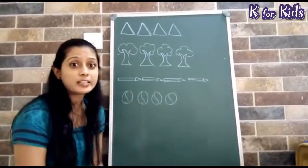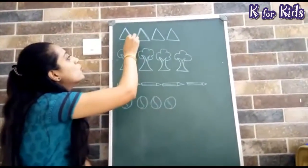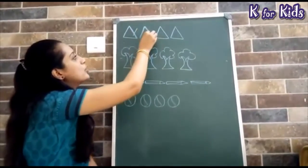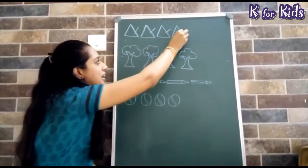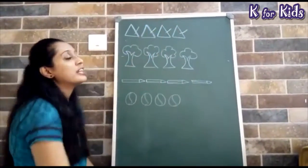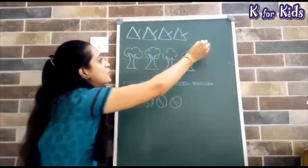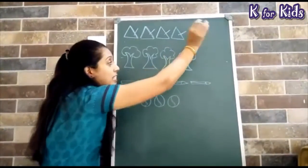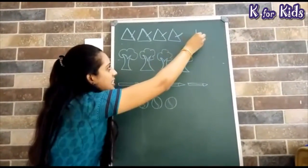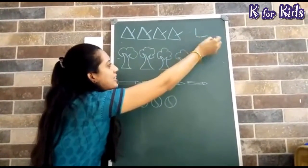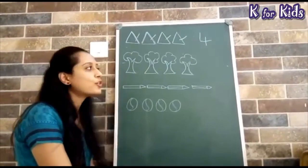Now, how do we count? Let's start. 1, 2, 3 and 4. How many triangles are there? 4. So, how do we write 4? Standing line, sleeping line, standing line. What does it make? 4.